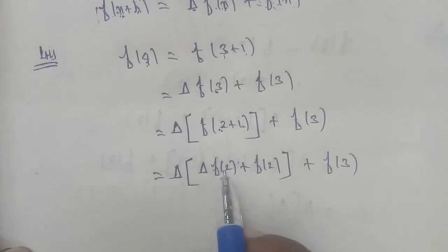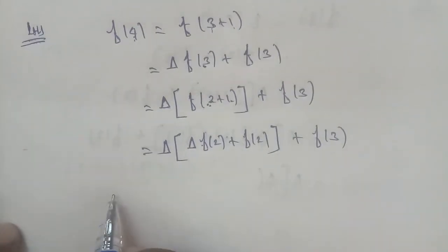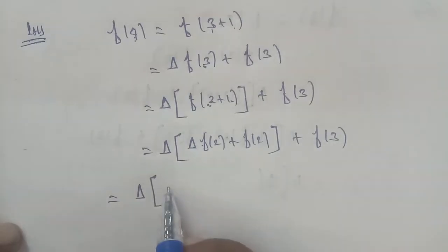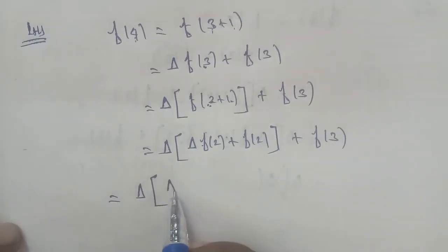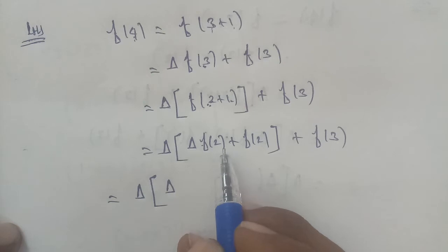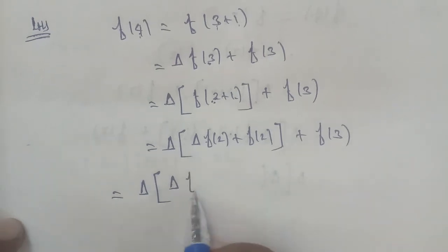Then we split this. E equal to delta. This delta update. This f(x) is f(x), this f(x) is f(x), this f(x) is f(x) plus 1.